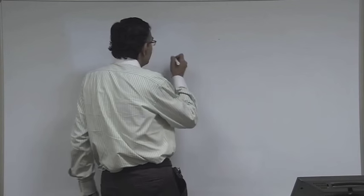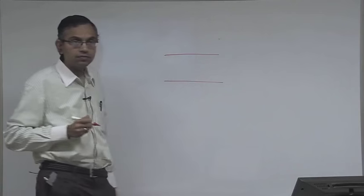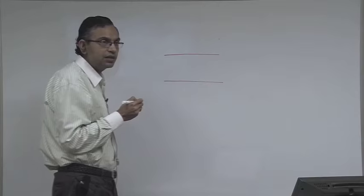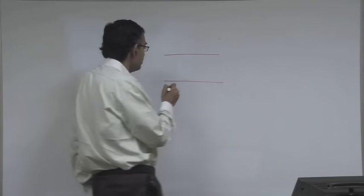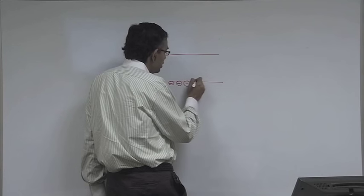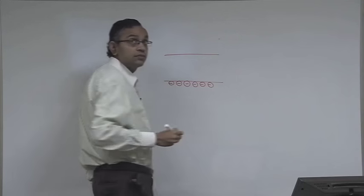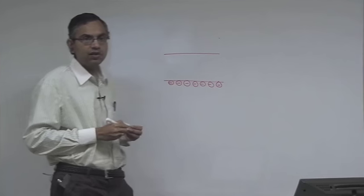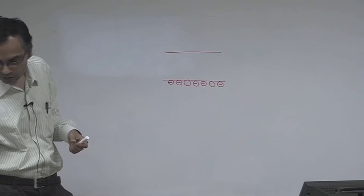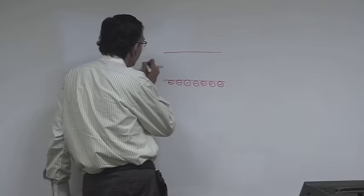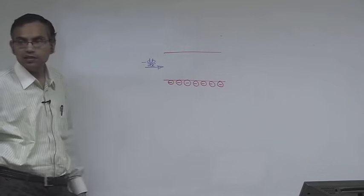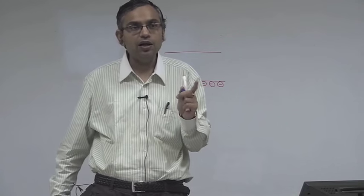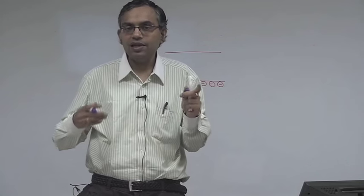Let us say that you have a channel - the same parallel plate channel example we have taken for describing the electroosmotic velocity profile. Let us say that the surface has negative charge on both top and bottom. Now let us say that you have a pressure gradient minus dp/dx in this direction. In electroosmosis you are applying an axial electric field, but in streaming potential phenomena you are not applying any axial electric field - there is only an axial pressure gradient.